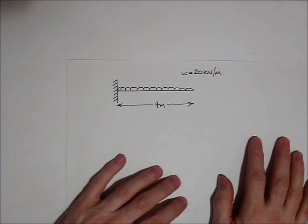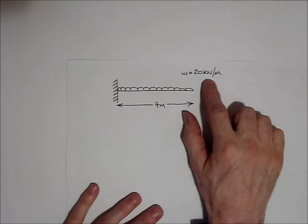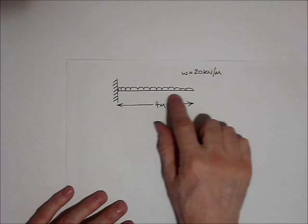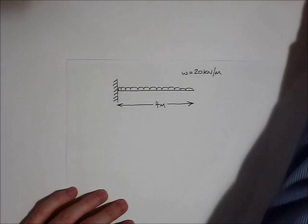Hi, this is a tutorial for a cantilever beam carrying a uniformly distributed load of 20 kN per meter. What we're going to do is look at the deflected shape of the beam, only qualitatively, and then calculate the bending moment at a number of points along the beam so that we can draw the bending moment diagram.